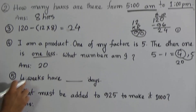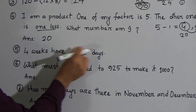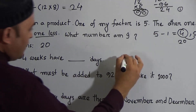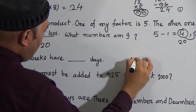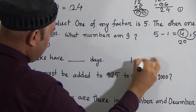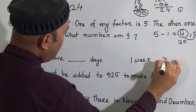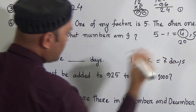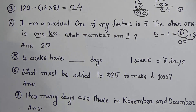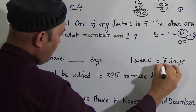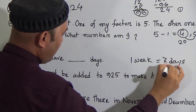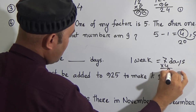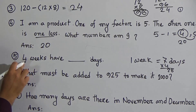Question five: how many days are there in 4 weeks? One week has 7 days. So multiply 7 by 4: 4 sevens are 28. Therefore 4 weeks have 28 days.